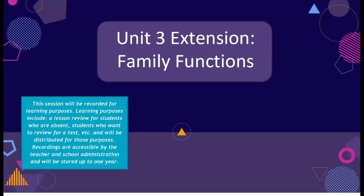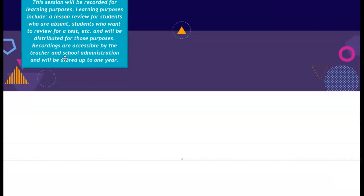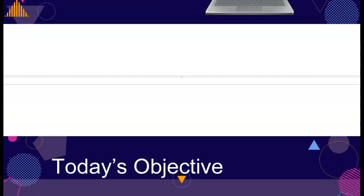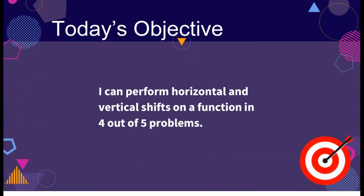Today we'll be looking at Unit 3 extension: family functions. This is an extension lesson, so it's a little bit more challenging than the lessons we've looked at so far. We're going to be doing an activity on the formative, and it is worth extra credit and honors credit. Our objective for today is: I can perform horizontal and vertical shifts on a function in 4 out of 5 problems.